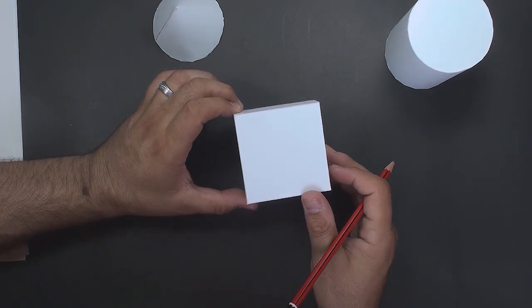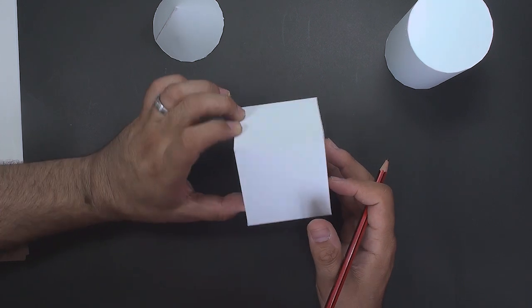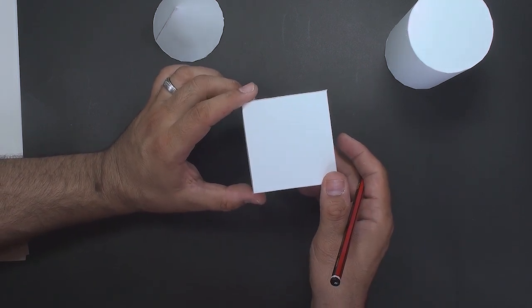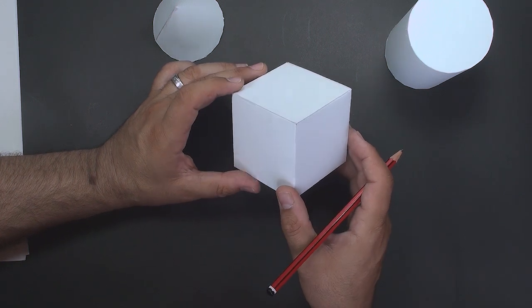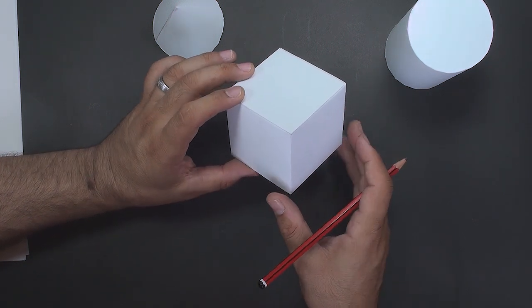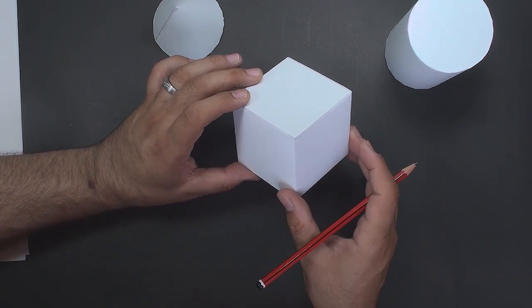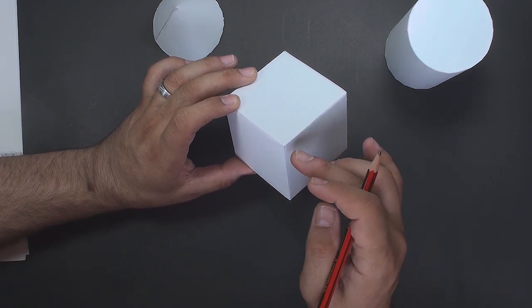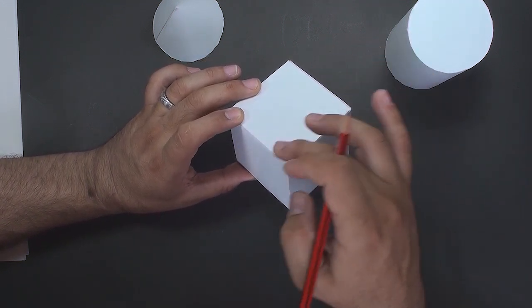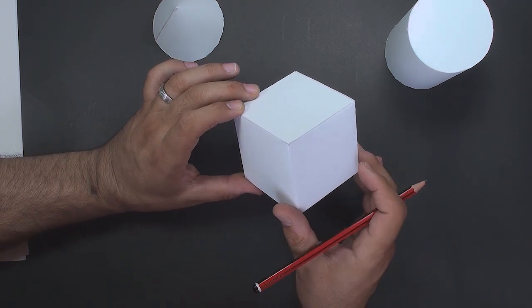The third volume I will introduce is a cube. Look, the cube is a square in all directions, whether from the top, from the left, or from the right. If we look at the cube from the corner, we see all three surfaces: top, right, and left. There are six squares in the cube.